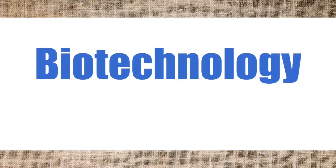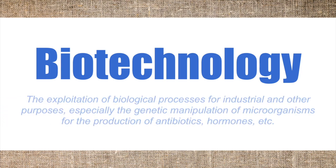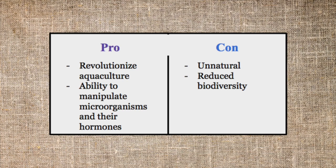In aquaculture, there is also the issue of biotechnology. Biotechnology is defined as the exploitation of biological processes for industrial and other purposes, especially the genetic manipulation of microorganisms for the production of antibiotics, hormones, etc. Biotechnology can, in some ways, revolutionize aquaculture with its ability to manipulate microorganisms and their hormones, which is a plus for many scientists. On the other hand, it involves genetic manipulation and the exploitation of biological processes, which could be considered unnatural or cause reduced biodiversity.